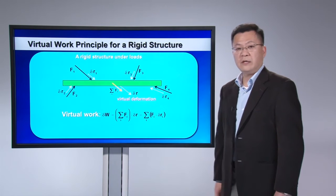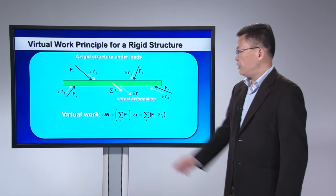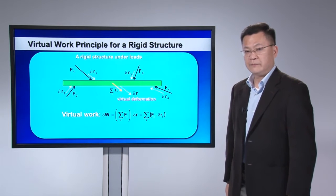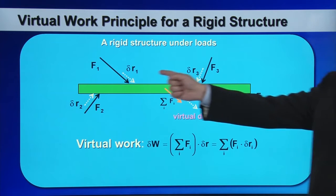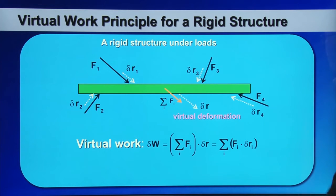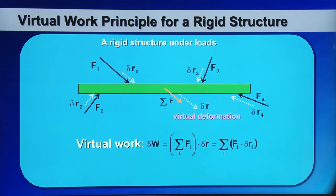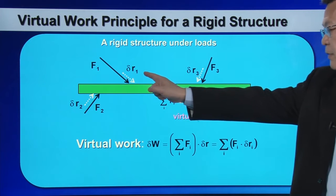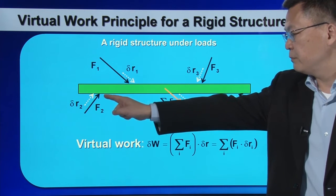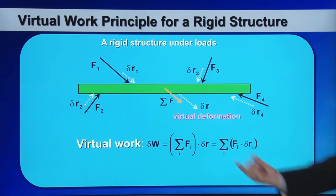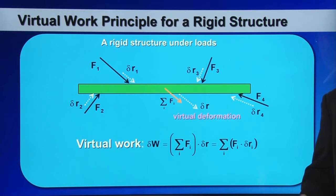Alternatively, we can establish virtual work by doing force-by-force calculations. This virtual deformation causes deformations at various locations where the forces are acting. For instance, at the location of F1 you will see a virtual deformation of delta R1, and at F2 you will see delta R2. So instead of doing summation force times delta R, we do F1 times delta R1 plus F2 times delta R2, etc. Both calculations yield the same result because they represent the same virtual work.